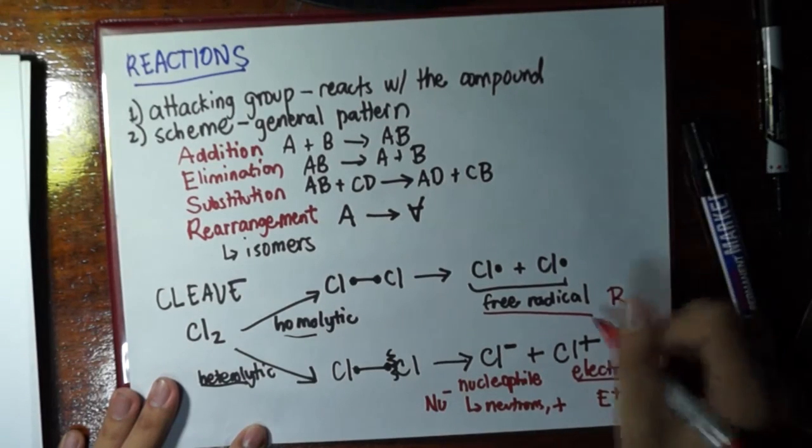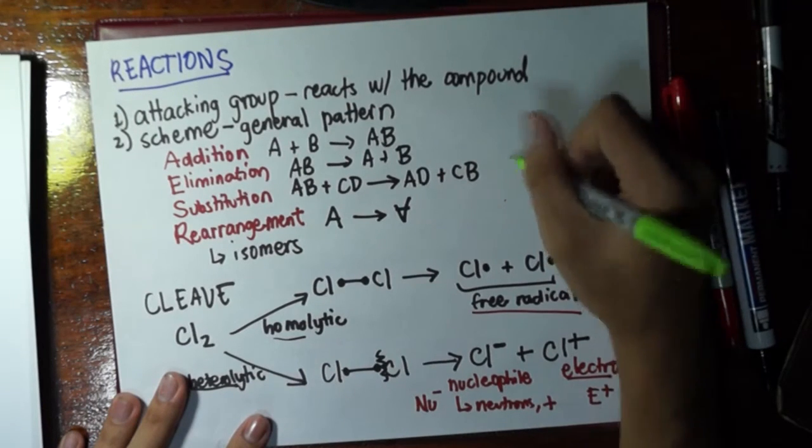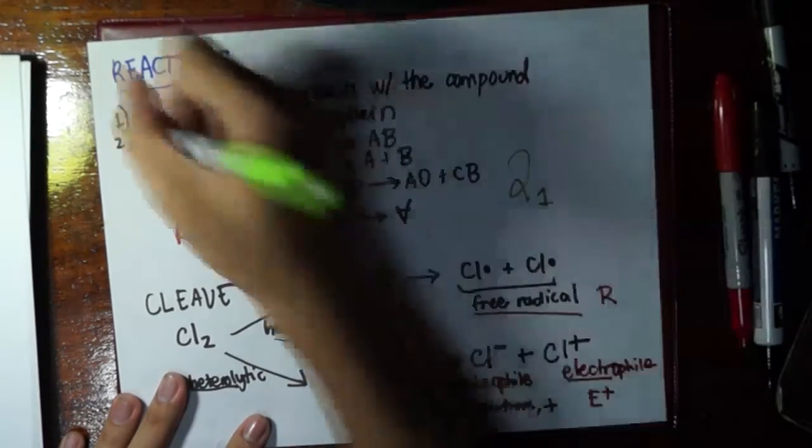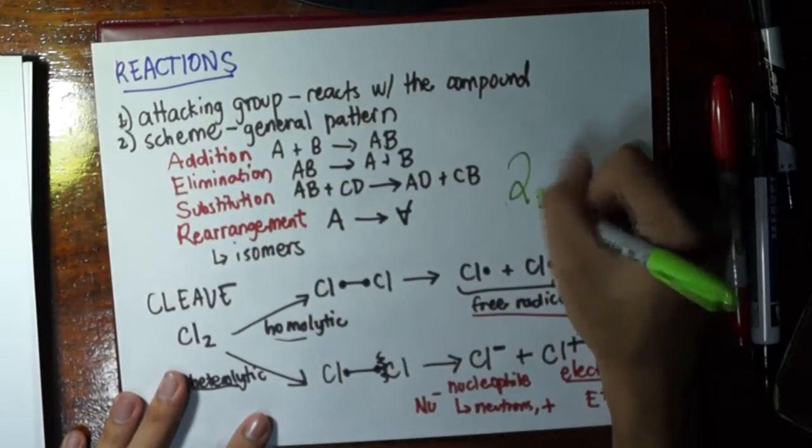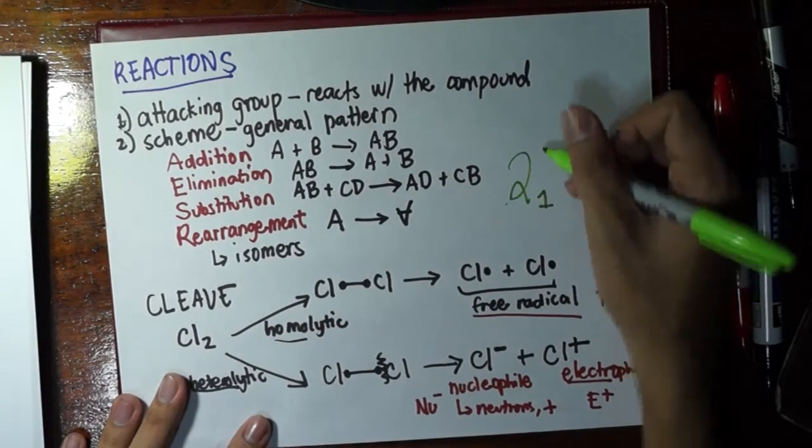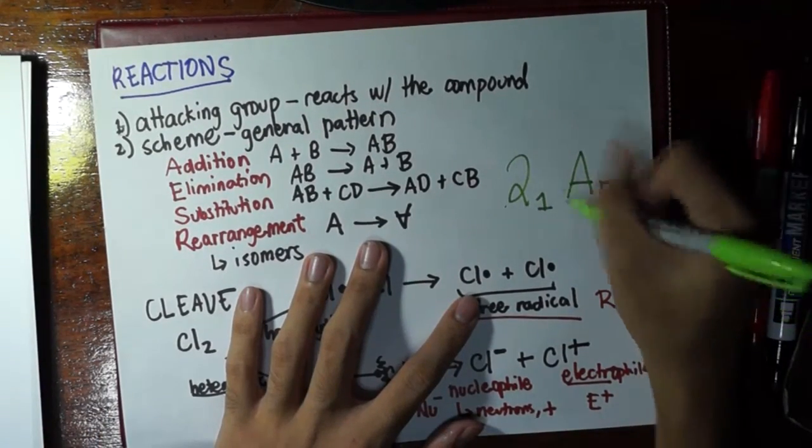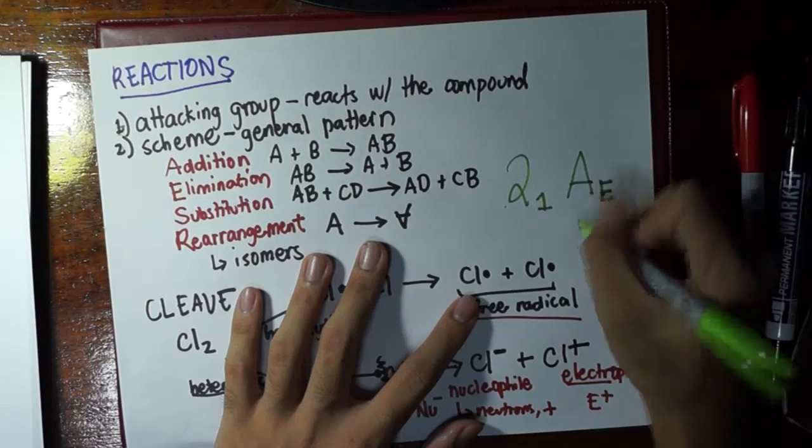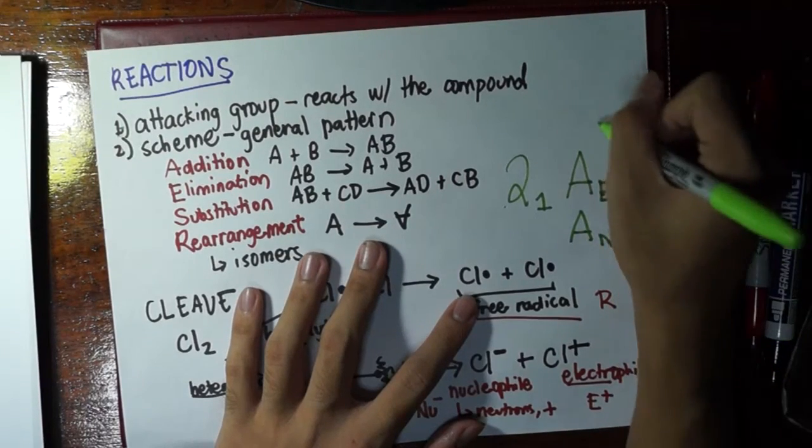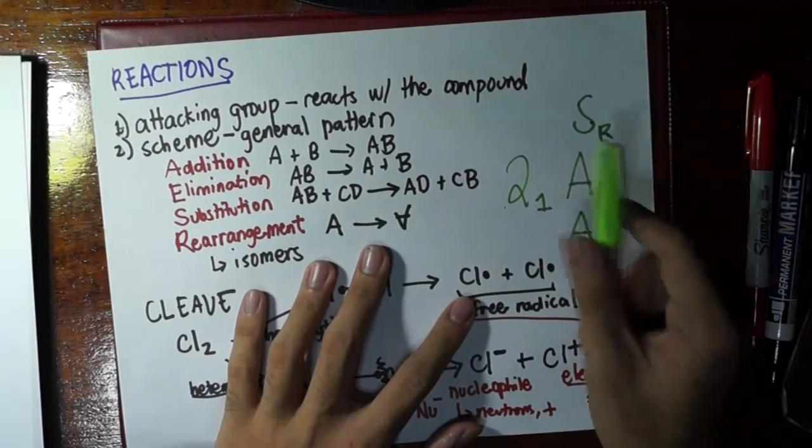For radicals, we just use R. So, we use the general format where the subscript is the attacking group, and the large letter is the scheme. So, if I draw something like this, we describe this reaction as electrophilic addition, or here we can say that this is nucleophilic addition, or we can say that this is free radical substitution. So, that's the general trend.